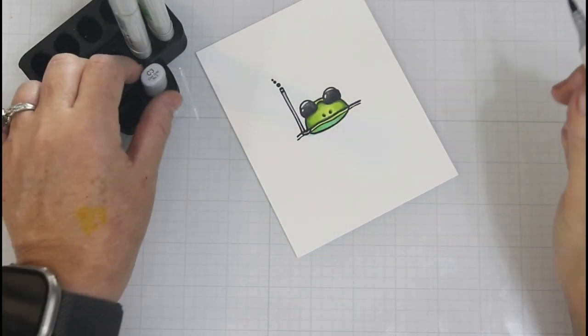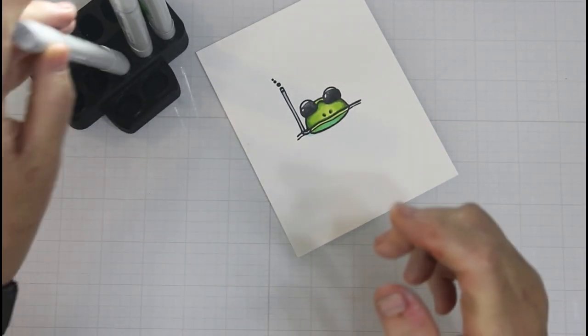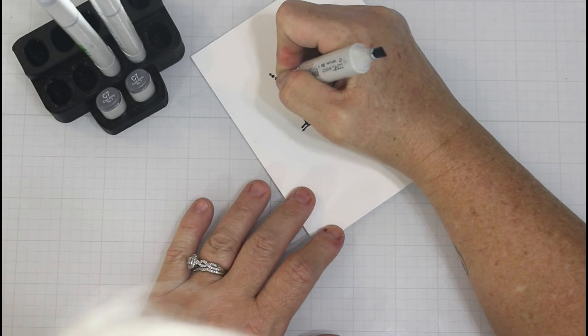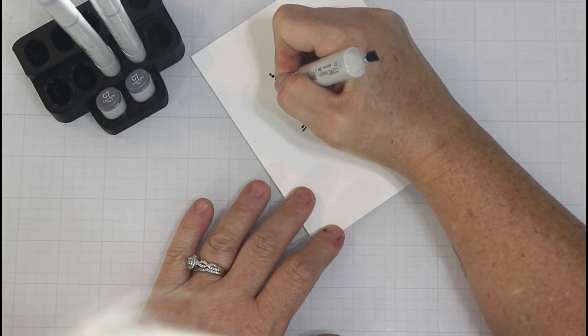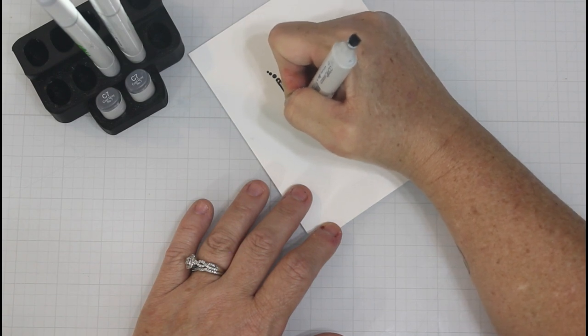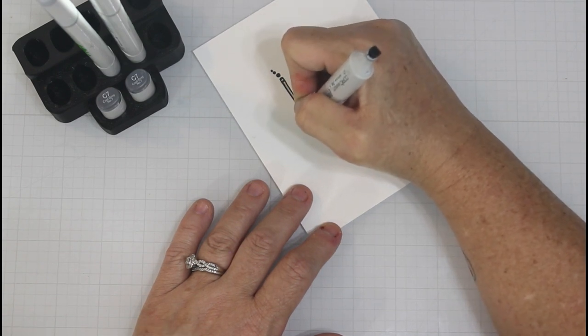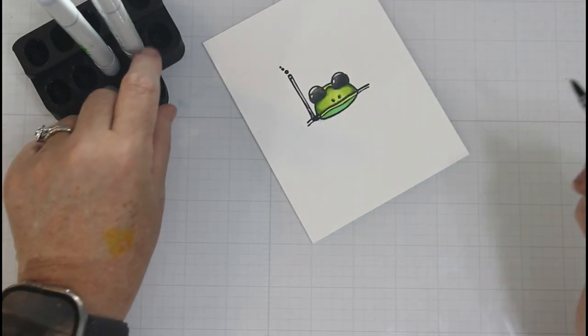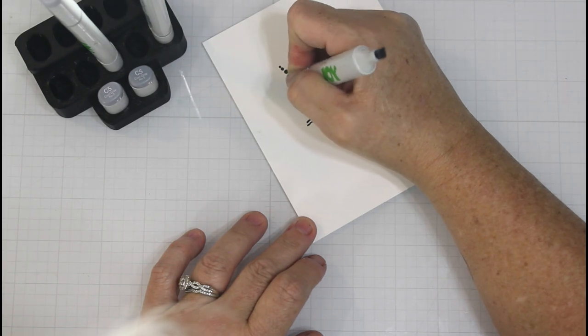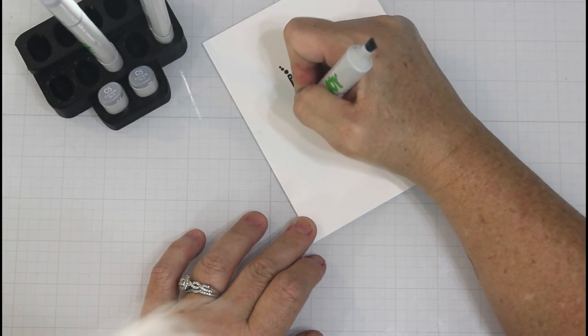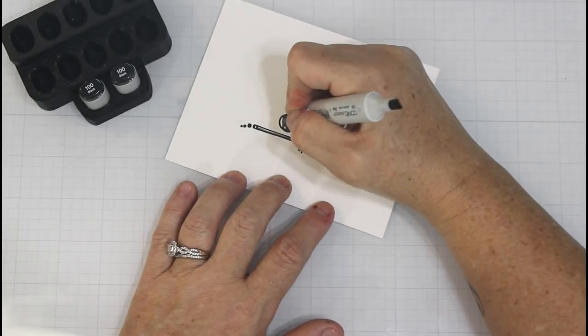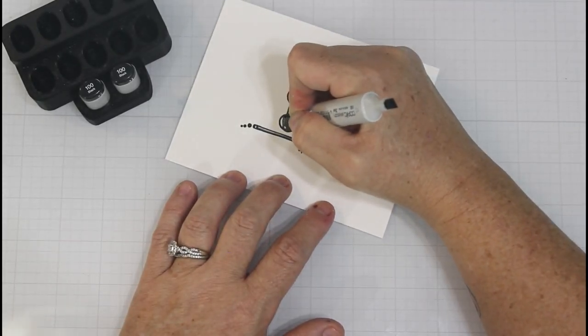For the snorkel, I do the same kind of coloring. I use a C3 and I moisten the paper all the way down the snorkel. Then I come in with my C7 and I'm concentrating that onto the left hand side and the portion that's under the water. Then I come in with a C5 and I blend that slightly. I don't really worry about much of a blend since this is such a small portion of the image.